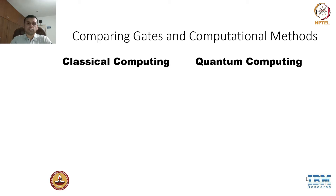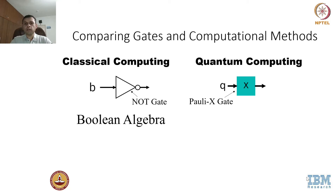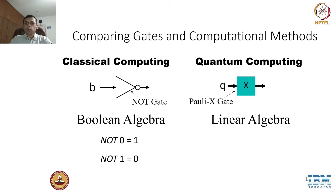Now let's look at the gates used in classical versus quantum computing. In classical computing, we have logic gates such as the NOT gate. In quantum computing, the equivalent is the Pauli-X gate. In classical computing, the framework used to reason about gates is Boolean algebra: NOT simply converts 0 to 1 and 1 to 0. In quantum computing, we use linear algebra, and gates are represented by matrices rather than simple Boolean functions.